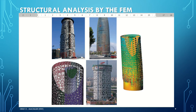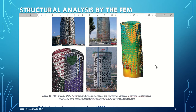An example of the finite element method analysis of an office building can be seen in figure 1.6. It shows an actual structure discretized into shell and 3-dimensional beam elements. This is actually the Agbar Tower in Barcelona.